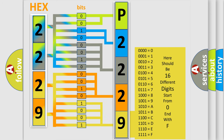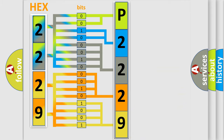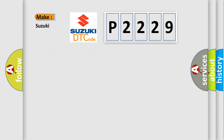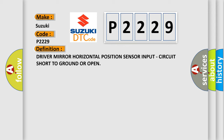We now know in what way the diagnostic tool translates the received information into a more comprehensible format. The number itself does not make sense to us if we cannot assign information about what it actually expresses. So, what does the diagnostic trouble code P2229 interpret specifically for Suzuki car manufacturers? The basic definition is: Driver mirror horizontal position sensor input, circuit short to ground or open.